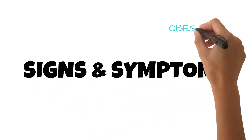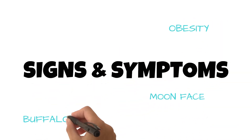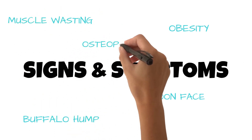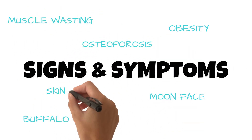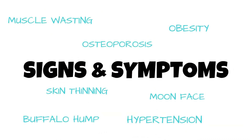Classical features are obesity, moon face, buffalo hump, sparing of the limbs, osteoporosis, skin thinning, and hypertension. We'll now discuss a mnemonic — if you remember the mnemonic 'WEIGHT FACED', those cover some of the classical features of Cushing's disease.